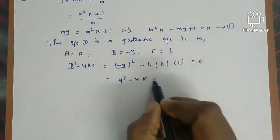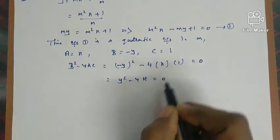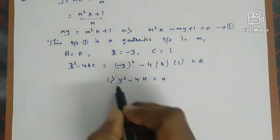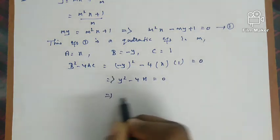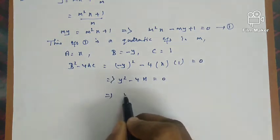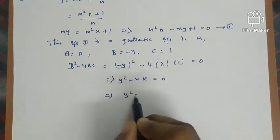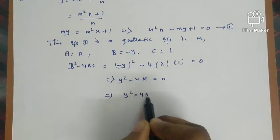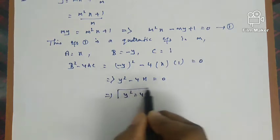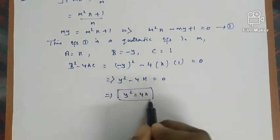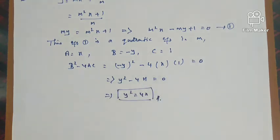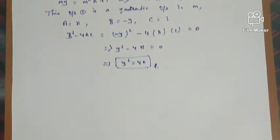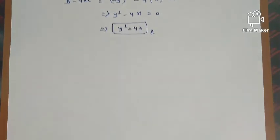Setting b² − 4ac = 0: y² − 4x = 0, which implies y² = 4x. This is the required equation of the envelope for the given family of straight lines.